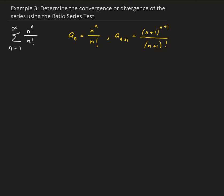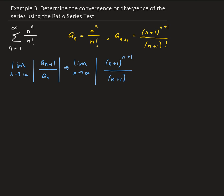Now let's take the limit as n goes to infinity of the (n+1)th term over the nth term. Since we have no negative values here, I'm going to go ahead and remove the absolute values. We have (n+1) to the (n+1) divided by (n+1) factorial, and we're dividing by the nth term, so we can change this to multiplication by taking the reciprocal of the nth term, which gives us n factorial over n to the power of n.